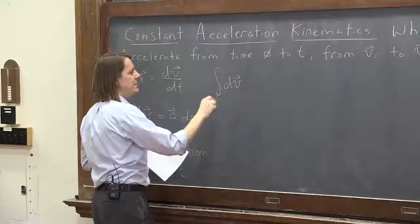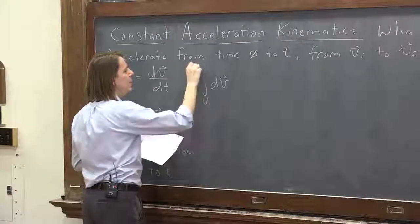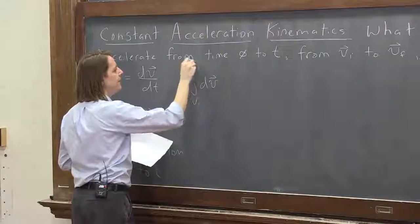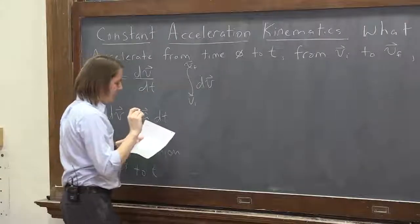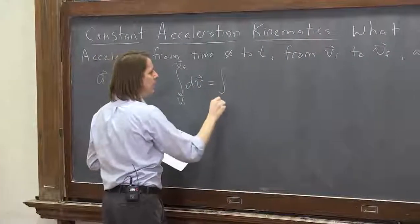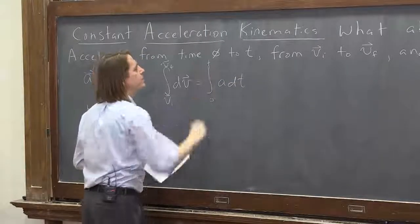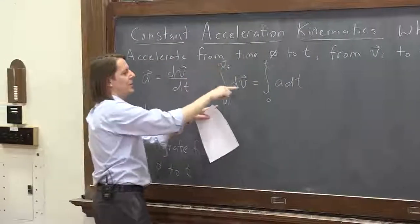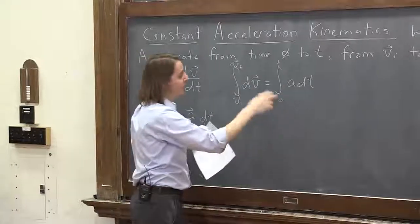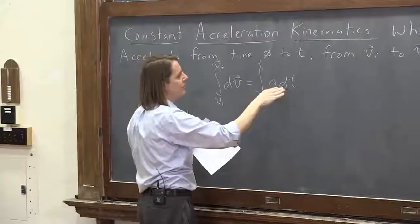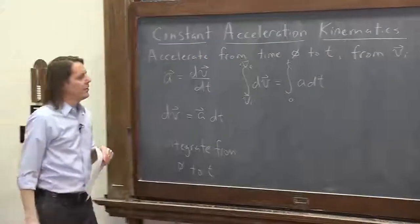You'd integrate dv from vi to vf, right? And that would be equal to the integral of adt from 0 to t. Your limits have to match whatever your differential is. Here the differential is v, so they're v's. Here the differential is dt, so they are t's.